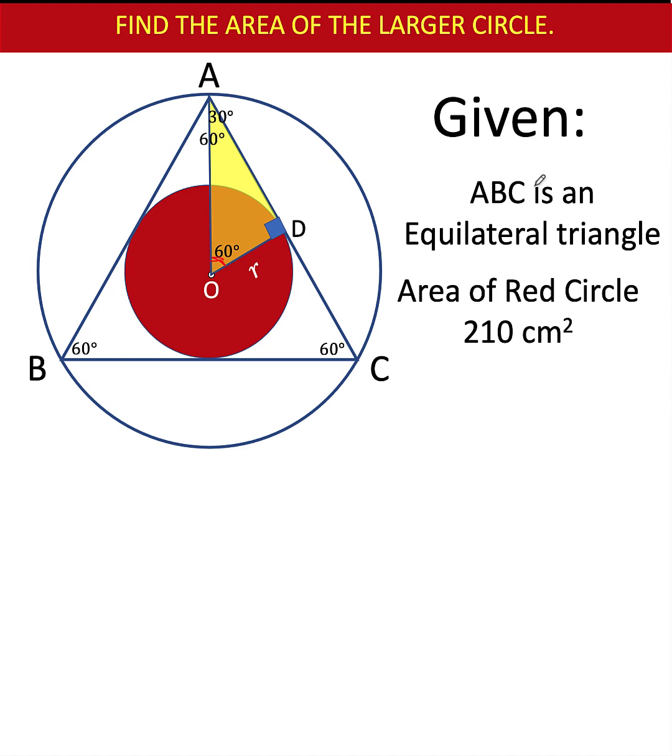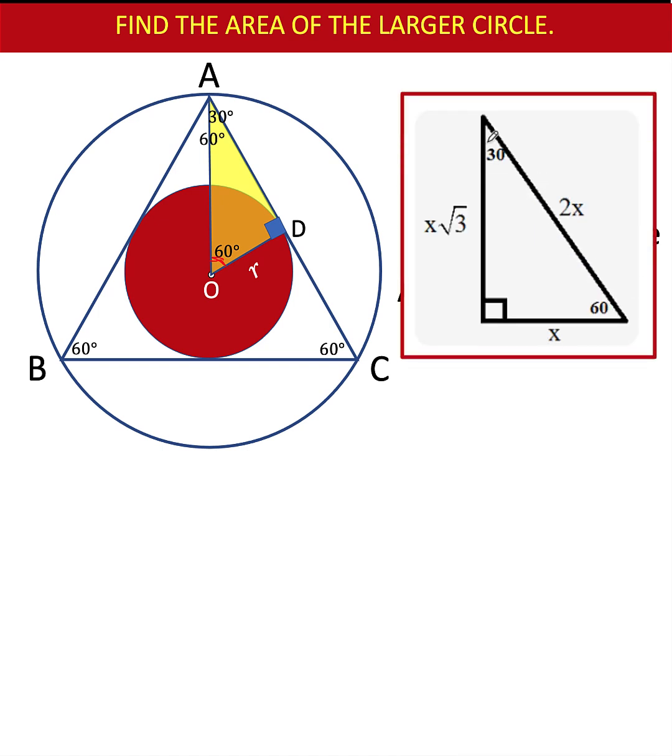Now let's recall some properties of a special 30-60-90 triangle. In this 30-60-90 triangle, if the length of the side opposite the 30-degree angle is x, then the hypotenuse of this right triangle is twice the length of this side, which is 2x.